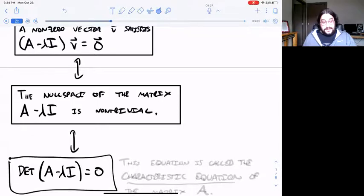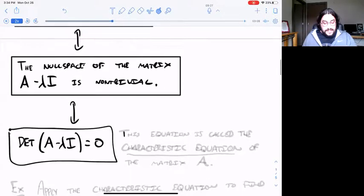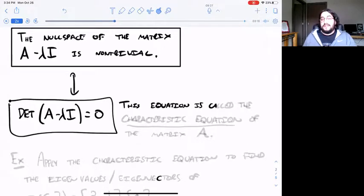This is the same as saying the null space of A minus lambda I is non-trivial. Now we have a nice way to determine if a null space is non-trivial. A zero determinant for a matrix implies a non-trivial null space for a square matrix.